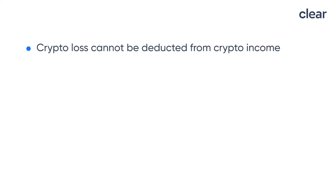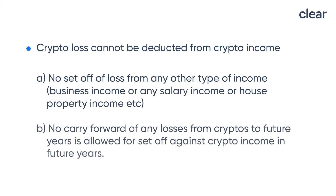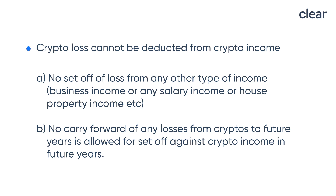Also, if instead of profit you have incurred a loss while transferring the crypto, then you are in an unfavorable position. You cannot use that loss to set off against any other type of income like business income, salary income, or house property income. And such loss is also not allowed for carry forward to be set off against any income in future years.